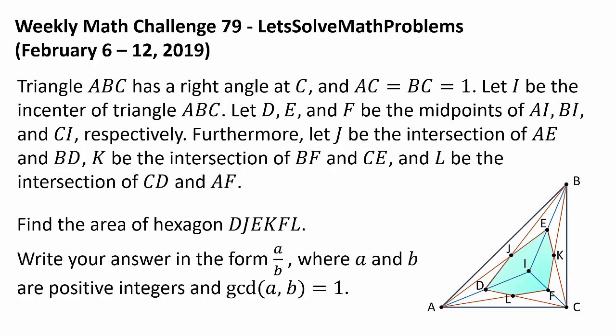Triangle ABC has a right angle at C, and AC is equal to BC is equal to 1. Let I be the incenter of triangle ABC, and let D, E, and F be the midpoints of AI, BI, and CI respectively.